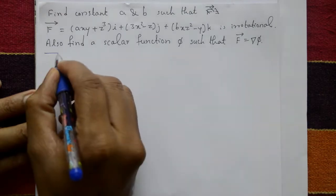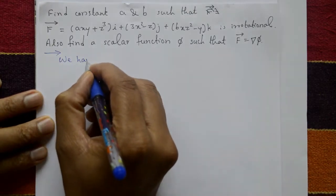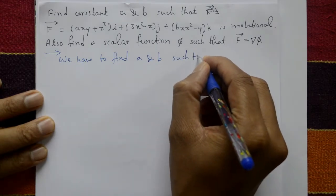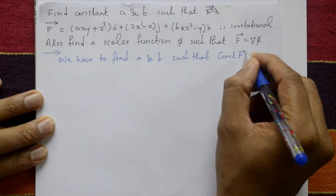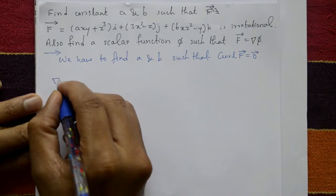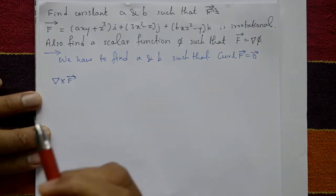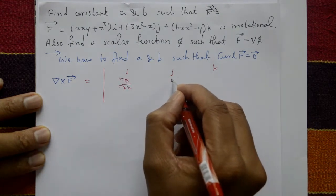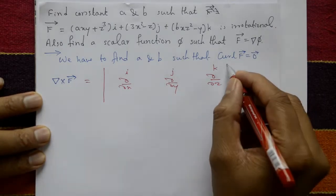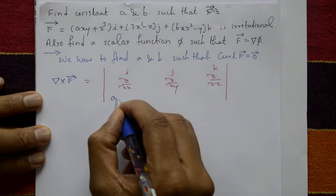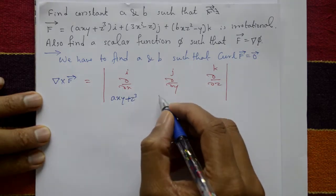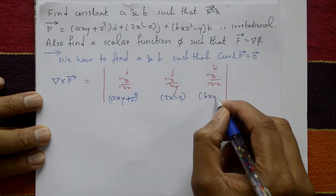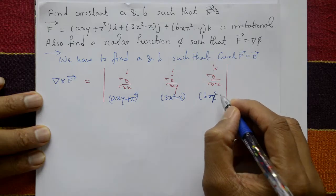We need to find a and b such that curl F equals zero. Curl means del cross F, and using the determinant form: i, j, k in the first row; ∂/∂x, ∂/∂y, ∂/∂z in the second row; and the components axy + z³, 3x² - z, and bz² - y in the third row.